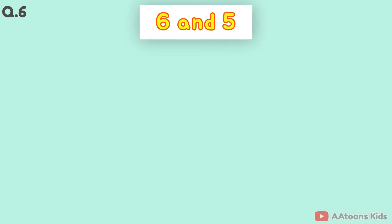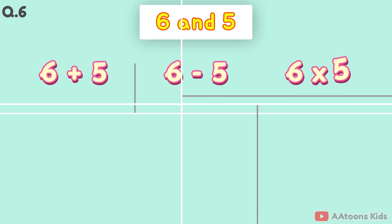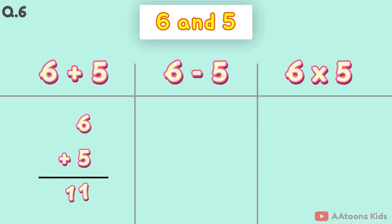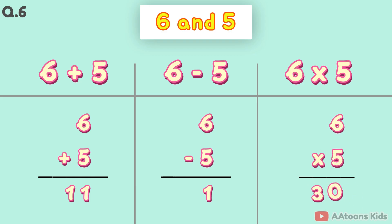The two numbers are 6 and 5. 6 plus 5 is 11. 6 minus 5 is 1. 6 times 5 is 30.